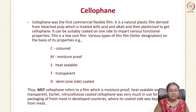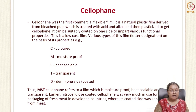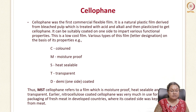Cellophane is the first commercial flexible film. It's a natural plastic film derived from bleached pulp, generally produced by treating the pulp with acid and alkali and then plasticizing it. It can be coated on one side to impart functional properties and has a low cost. Cellophane is designated by different letters: C stands for color, M for moisture proof, S for heat sealability, T for transparent, and D for demi-coated (coated on one side). For example, MST stands for moisture proof, heat sealable, and transparent.